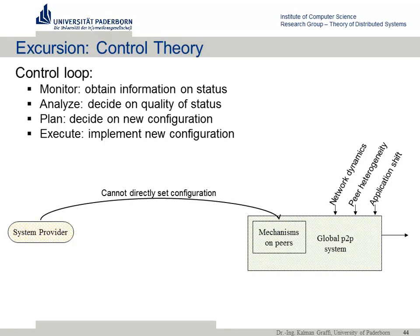This system model shows the global peer-to-peer system — all 100,000 nodes — with several mechanisms running. Every node has the same mechanism running individually, resulting in some overall quality of service. A system provider can set these values initially in the software provided for downloading, but once the peer-to-peer system is running, you cannot change it anymore. There are always network dynamics, peer heterogeneity, and application shifts changing in the background, so a configuration that initially results in good quality may over time result in bad quality.